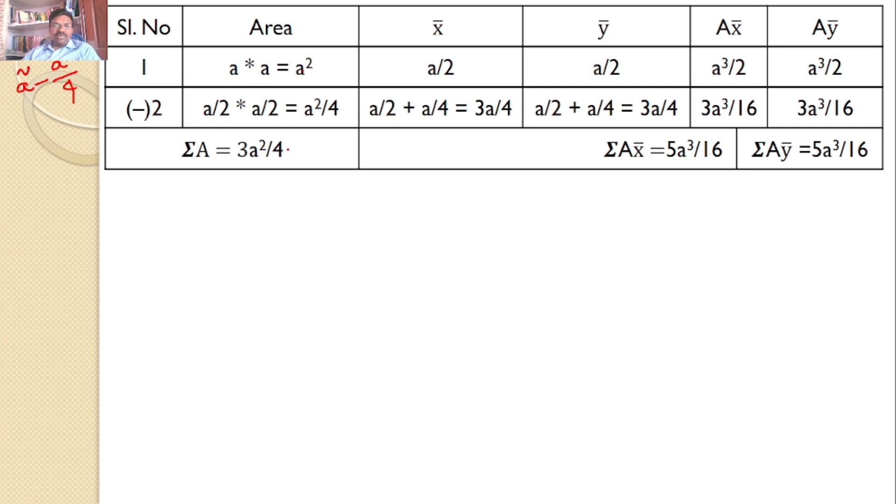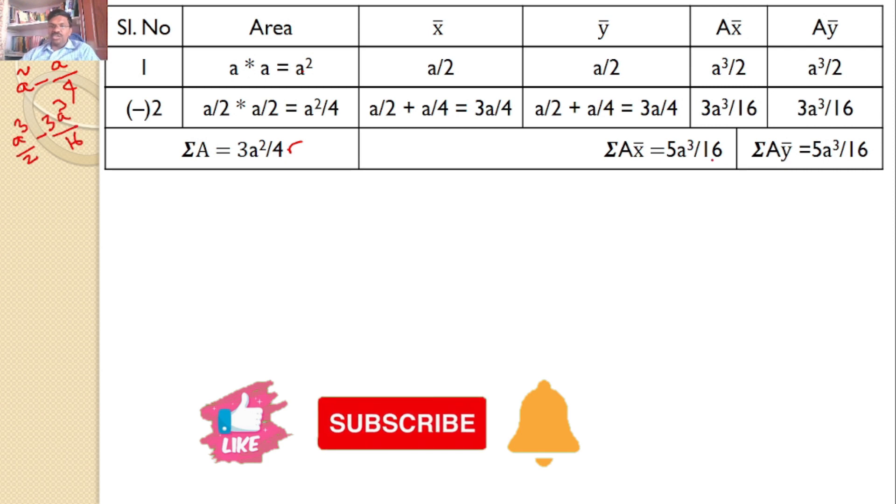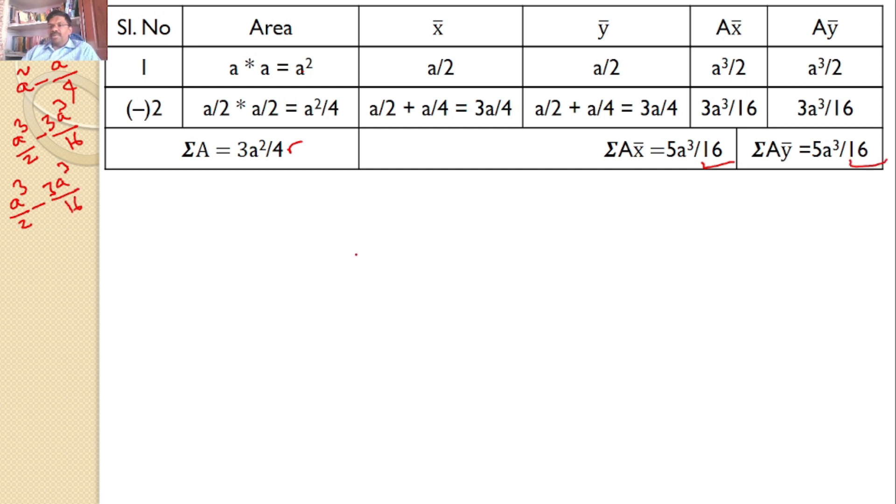Similarly, sigma A X bar: A squared by 2 minus 3A cubed by 16 equals 5A cubed by 16. Similarly, sigma A Y bar: A cubed by 2 minus 3A cubed by 16, which is 5A cubed by 16.